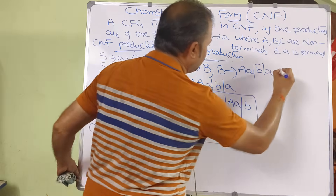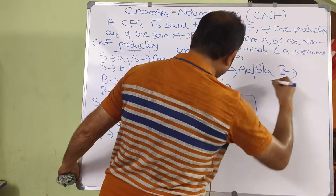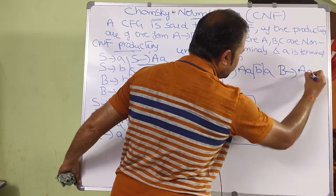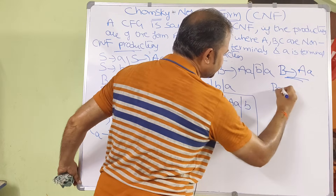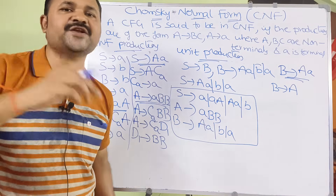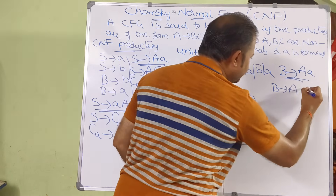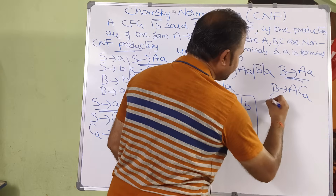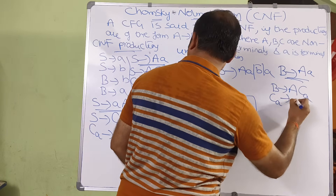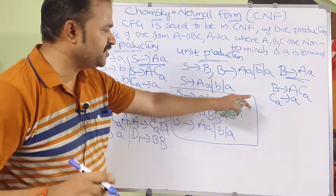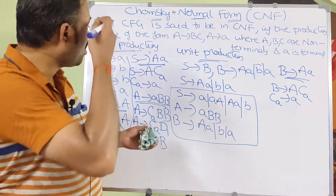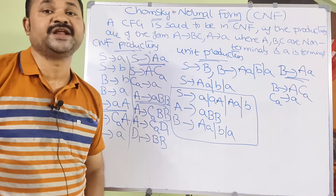Next we have B produces aA. Here we have a terminal, so replace small a with non-terminal CA. This gives B produces A·CA, where CA produces a. Non-terminal B is now producing two non-terminals — valid CNF. CA produces a is also valid CNF. All productions are now in Chomsky Normal Form.